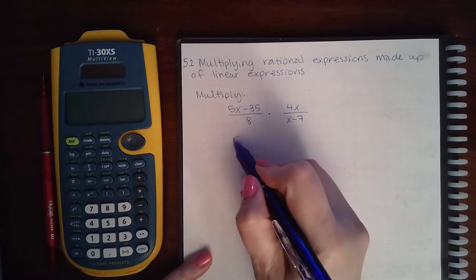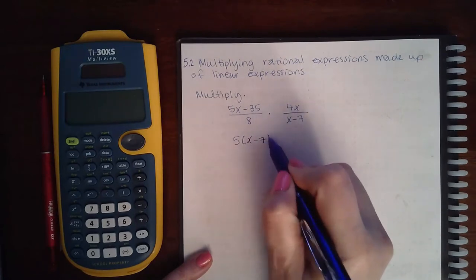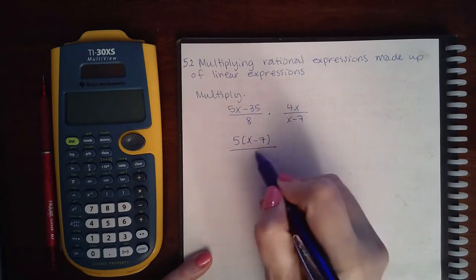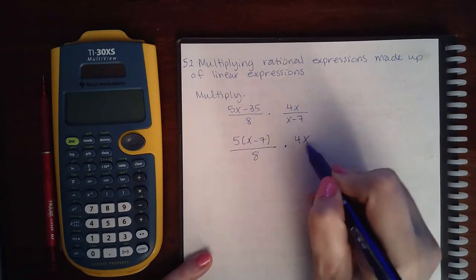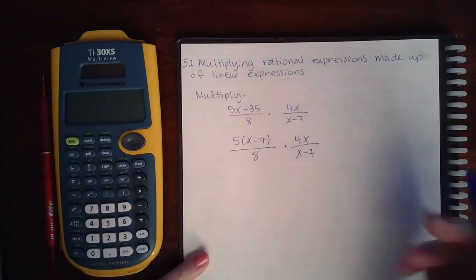I can factor out a GCF of 5, and then 8 I cannot factor, 4x I cannot factor, and x minus 7 is already factored.